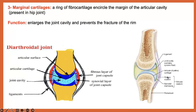Also, there is an accessory structure known as marginal cartilage. In the case of the scapula, we have the glenoid cavity and the head of the humerus. Marginal cartilage is present in certain cavities — such as the glenoid cavity of the scapula and the acetabulum of the pelvic bone. It is important to enlarge the joint cavity to allow the head of the humerus, and in the case of the hip joint for articulation, and also to prevent fracture of the rim of the cavity.